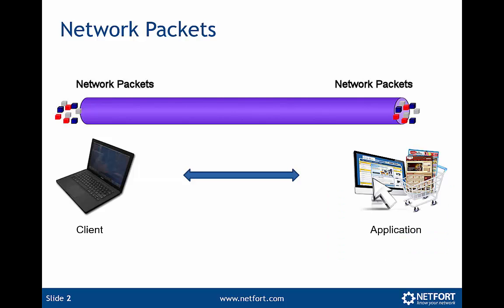Just a quick intro to network packets. Network packets flow between clients and servers, or clients and applications. So if you connect to a website for example, there is bi-directional packets. What we mean is your client sends data to the site — what page you want to access — and the website responds with images, text, video from whatever that page is. So packets flow back and forward between clients and servers.